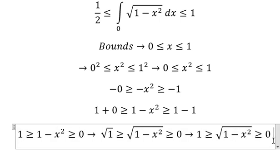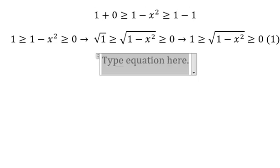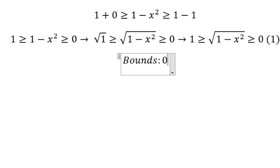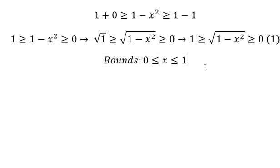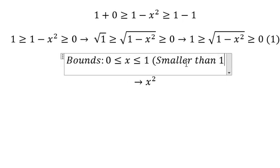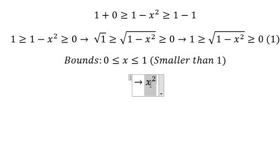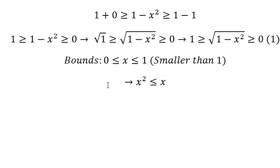This is about the first inequality. Now let's go to the second one. We still use the bounds from 0 to 1. When we put the power 2, this value is always smaller than 1 — because for any number between 0 and 1, squaring it gives something smaller. Now we put negative for both sides, so this will change accordingly.